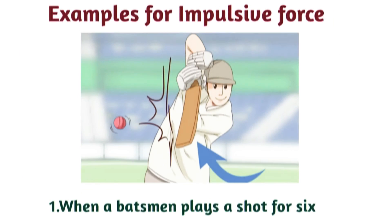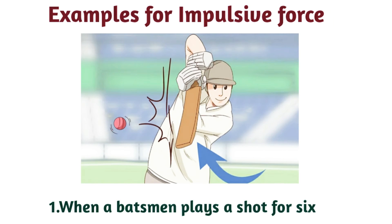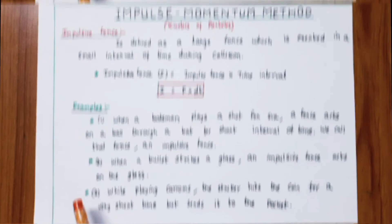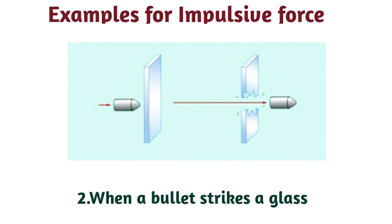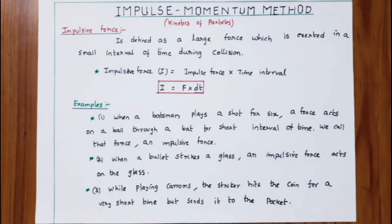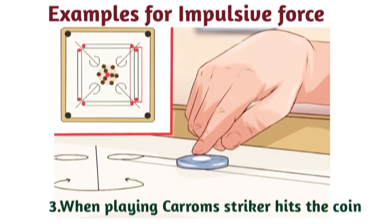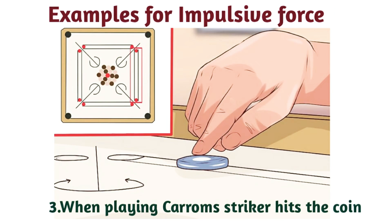Examples of impulsive force: First, when a batsman plays a shot for six, a force acts on the ball through the bat for a short interval. Second, when a bullet strikes glass, an impulsive force acts on the glass. Third, while playing caroms, the striker hits the coin for a very short time but sends it to the pocket.